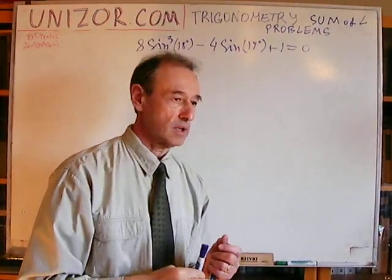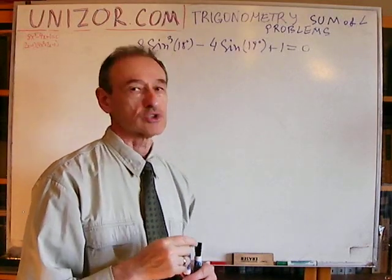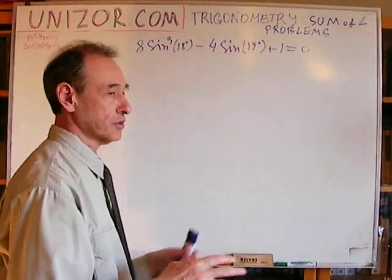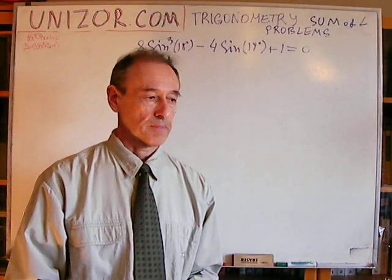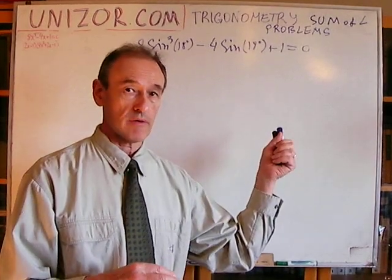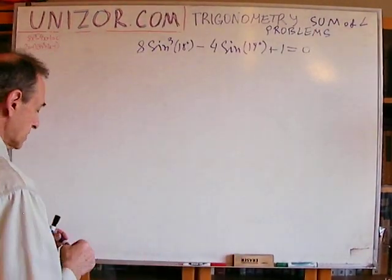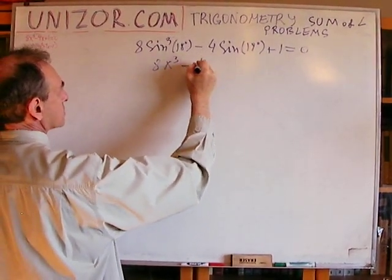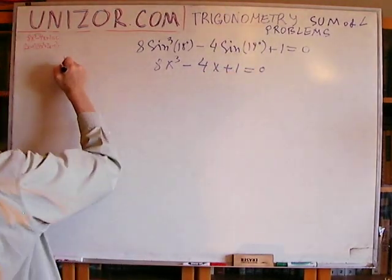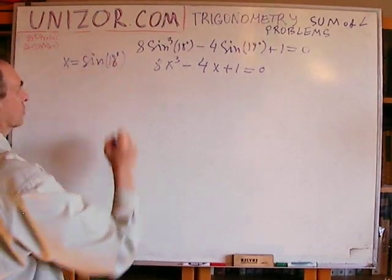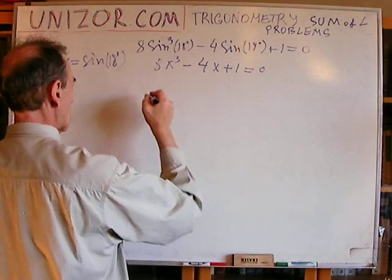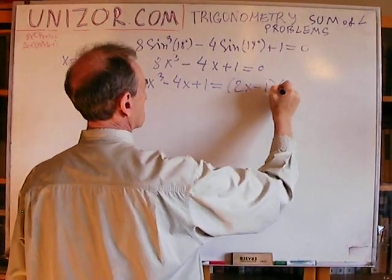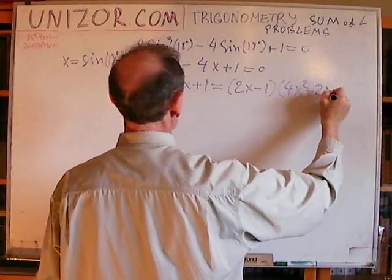Now let me introduce a shortcut, and then I will explain how I arrived at it. If you go to any textbook or internet site containing a derivation of sine of 18 degrees, you will basically see: let's rewrite in algebraic form as 8x³ minus 4x plus 1 equals 0, where x is sine of 18 degrees. They say 8x³ minus 4x plus 1 equals (2x minus 1)(4x² plus 2x minus 1).